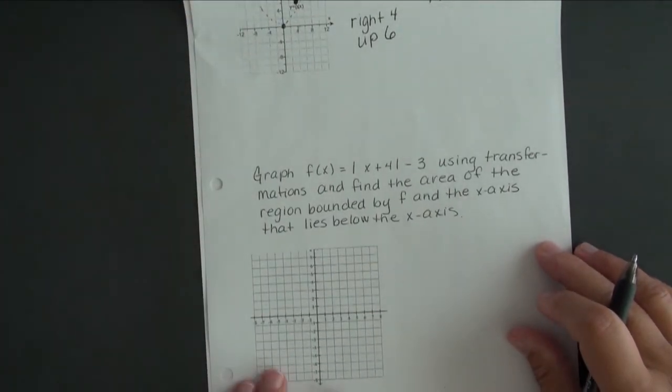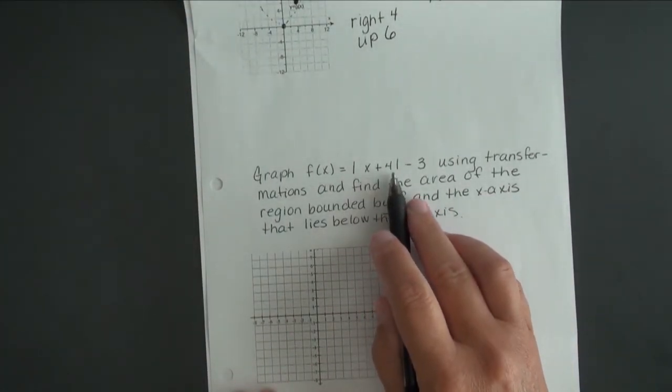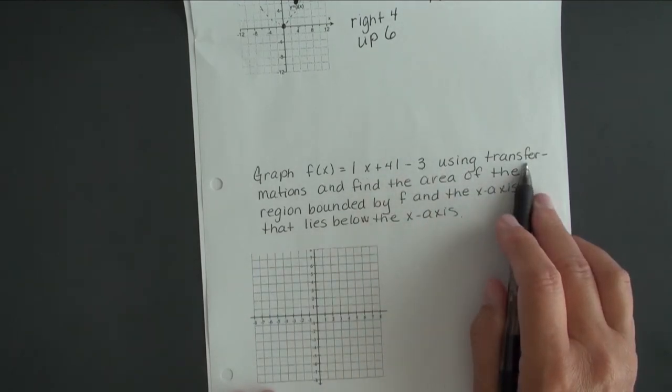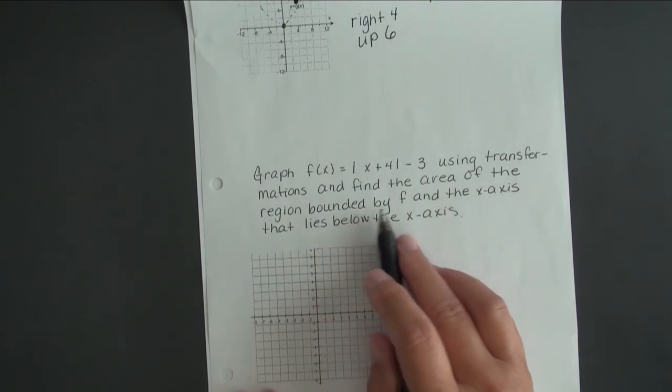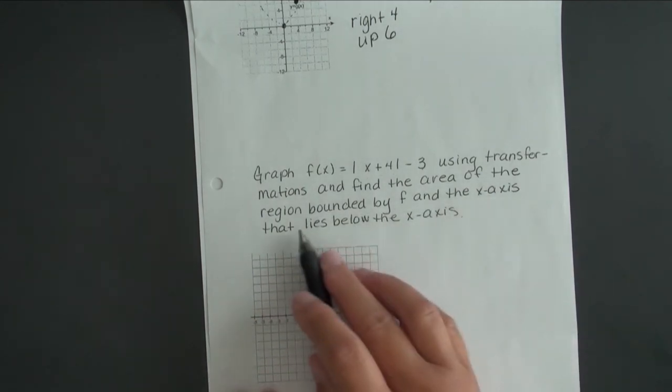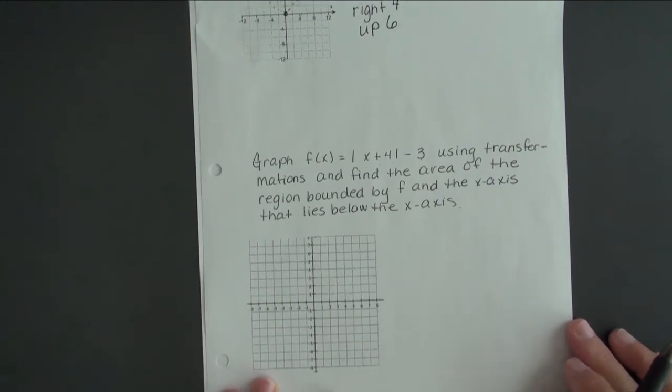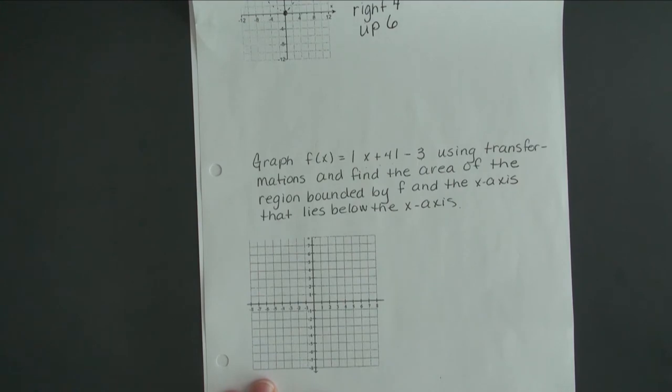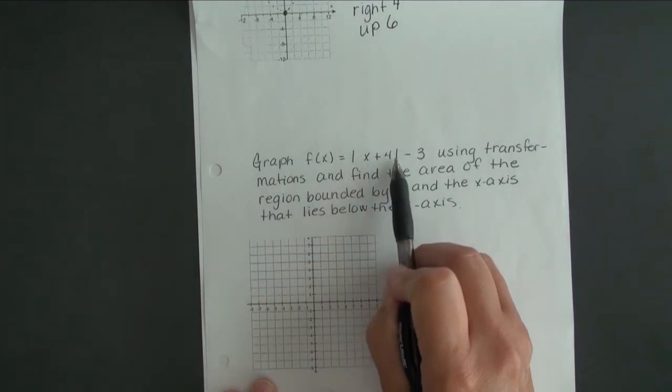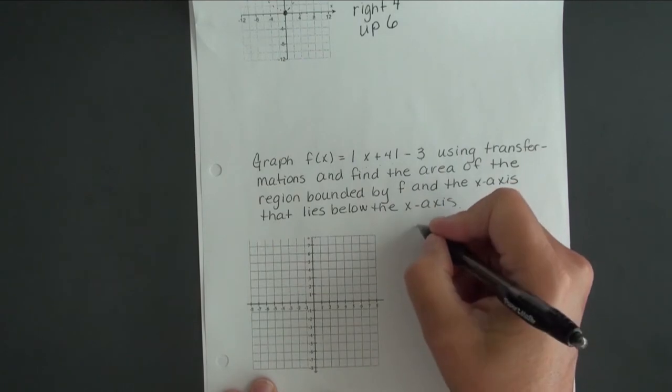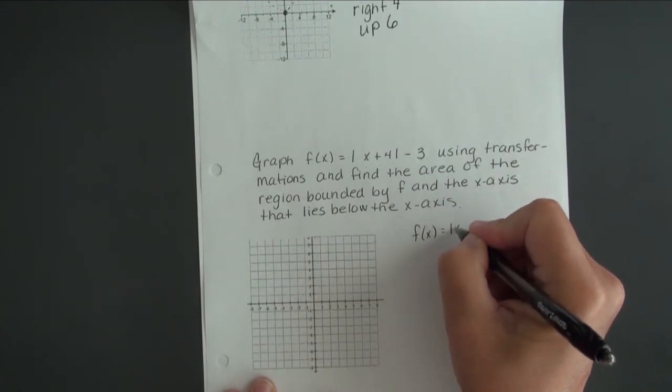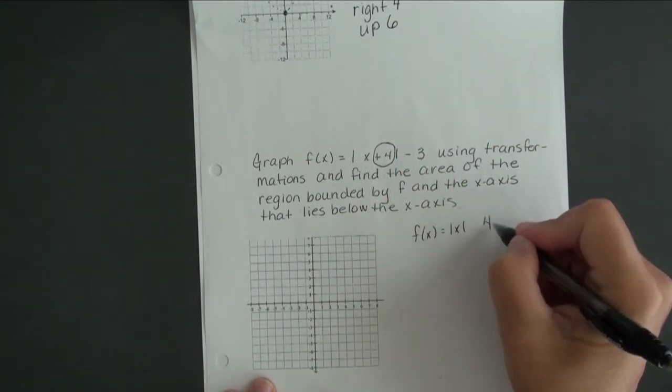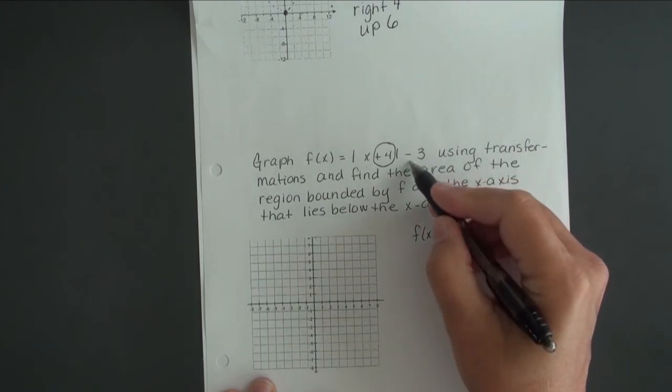Our next example says graph the absolute value of x plus 4 minus 3 using transformations and find the area of the region bounded by f and the x-axis that lies below the x-axis. I think this is kind of like one of your homework problems. Let's graph this first. This is the absolute value function, and it has been shifted 4 to the left and down 3.